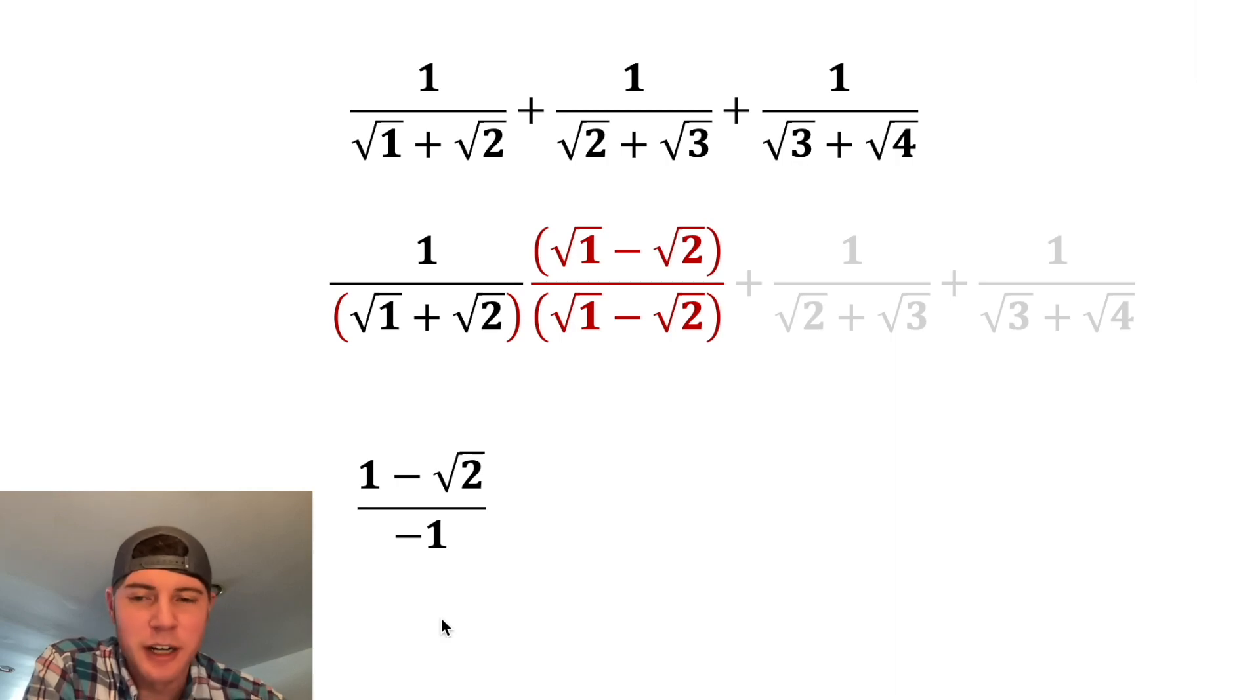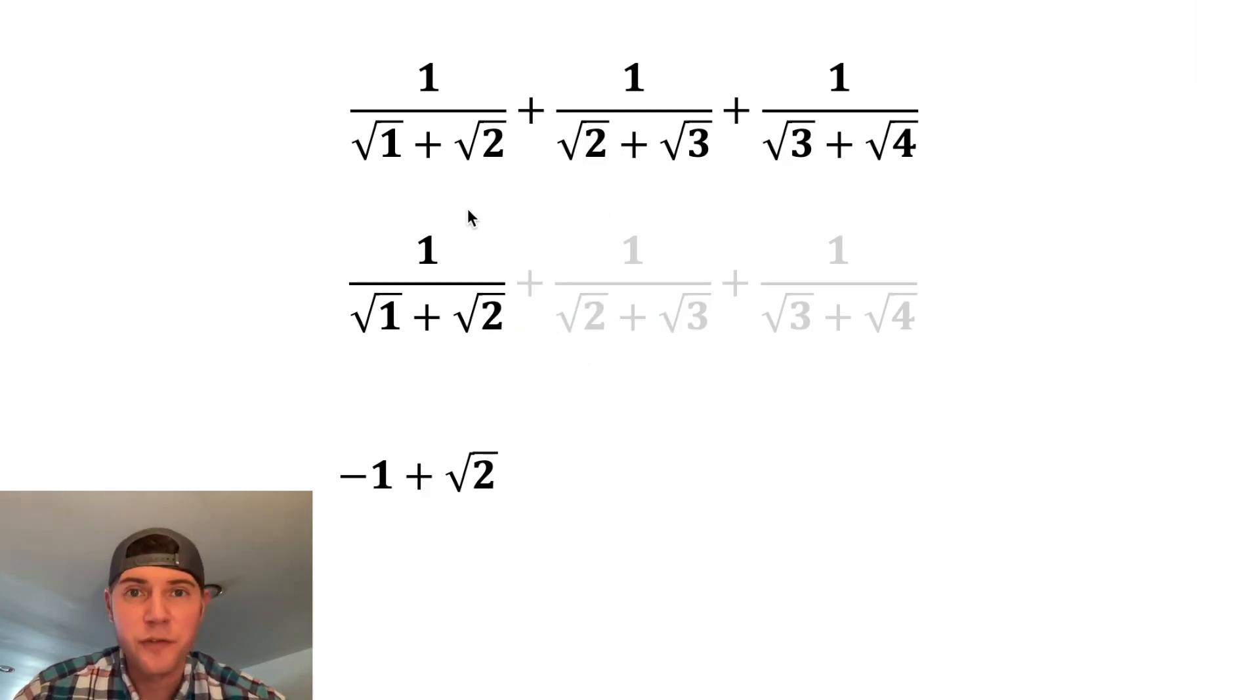And we can clean up 1 minus 2 to give us negative 1. To get rid of this negative 1 in the denominator, we can multiply top and bottom by negative 1. This negative is going to distribute to both of these, making it a negative 1 and a positive root 2. And on bottom, negative 1 times negative 1 is just positive 1. And since we have a 1 in the denominator, we don't need it anymore. All of this right here is simplified into negative 1 plus root 2. In fact, we don't even need this red stuff. This first fraction simplified into negative 1 plus root 2.